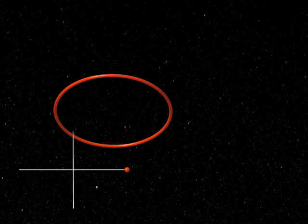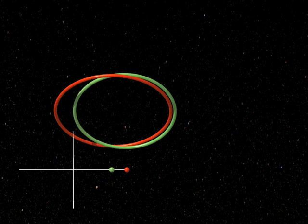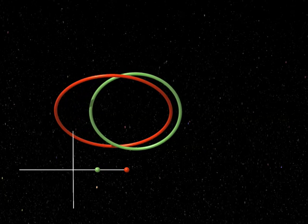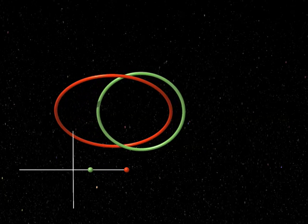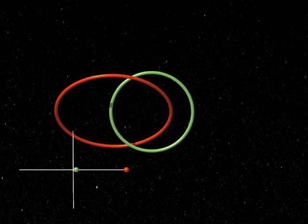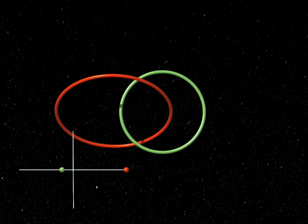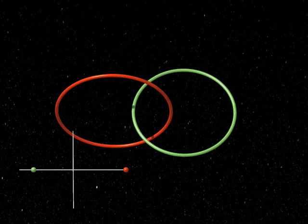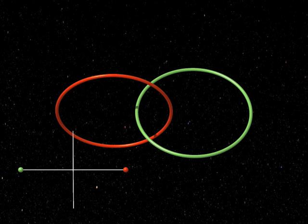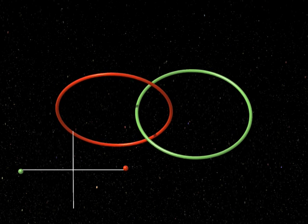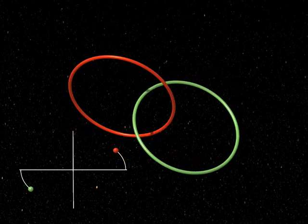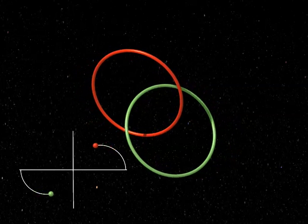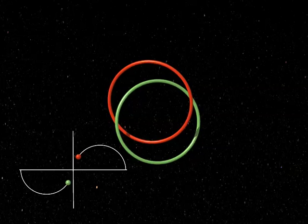Let us look at two of these circles simultaneously. In the lower left-hand corner there are two moving complex points — one red, the other green. You can see the circles associated to the red and green points. Notice that these two circles are linked together, like two links of a chain. It is impossible to separate them without breaking them.